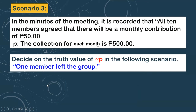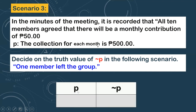This is the third scenario: 'One member left the group.' If we make this table again, what is the truth value of P? Go back to proposition P — do you think we can still collect 500 pesos if one member left the group? No. So the truth value of P is false. The negation of a false statement is true. That is the truth value of not P given this scenario.